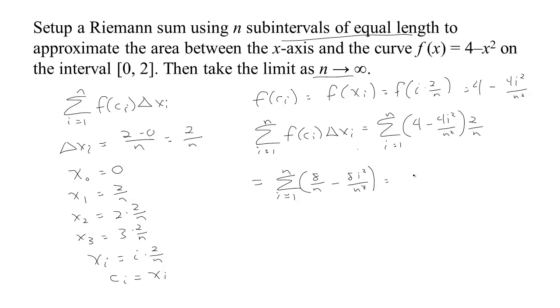We know from our rules of sums that this would be the sum from i equals 1 to n of 8 over n minus the sum from i equals 1 to n of 8i² over n³.